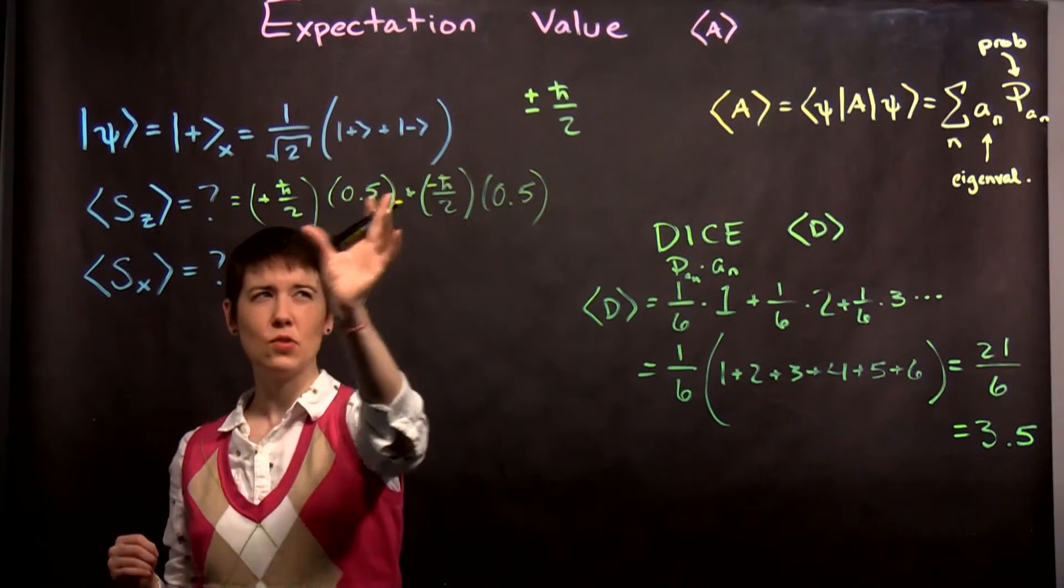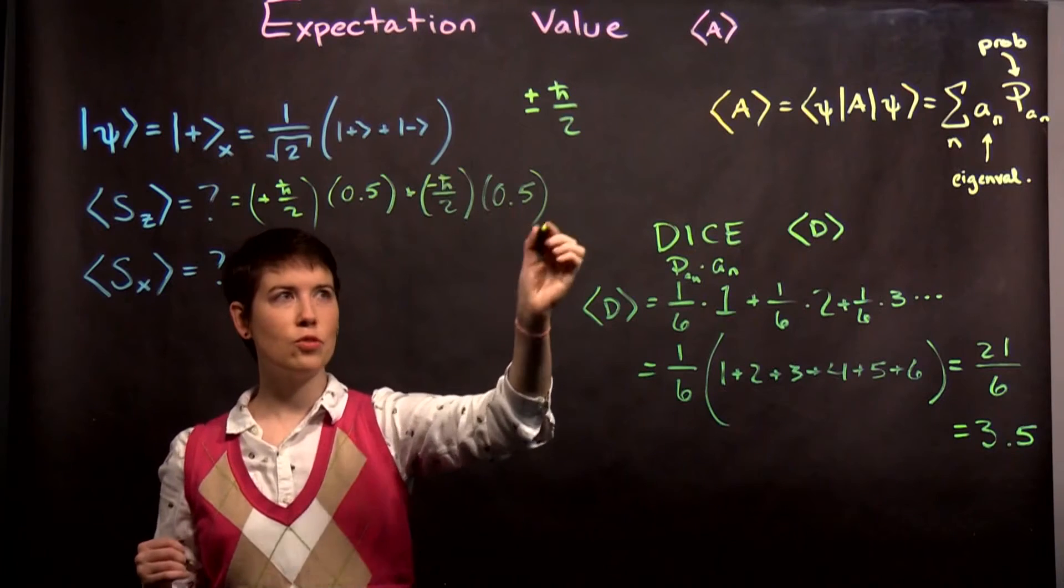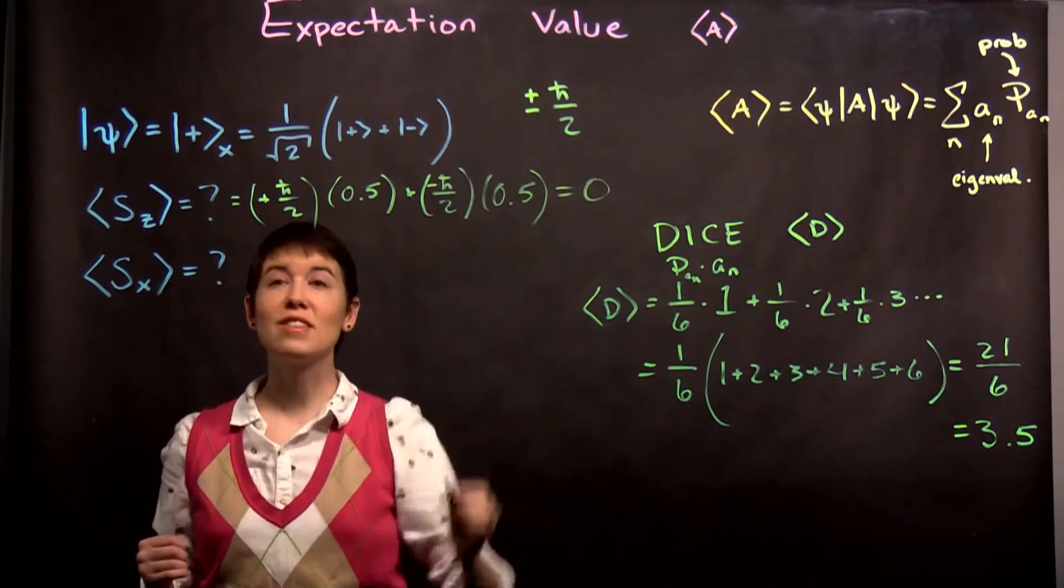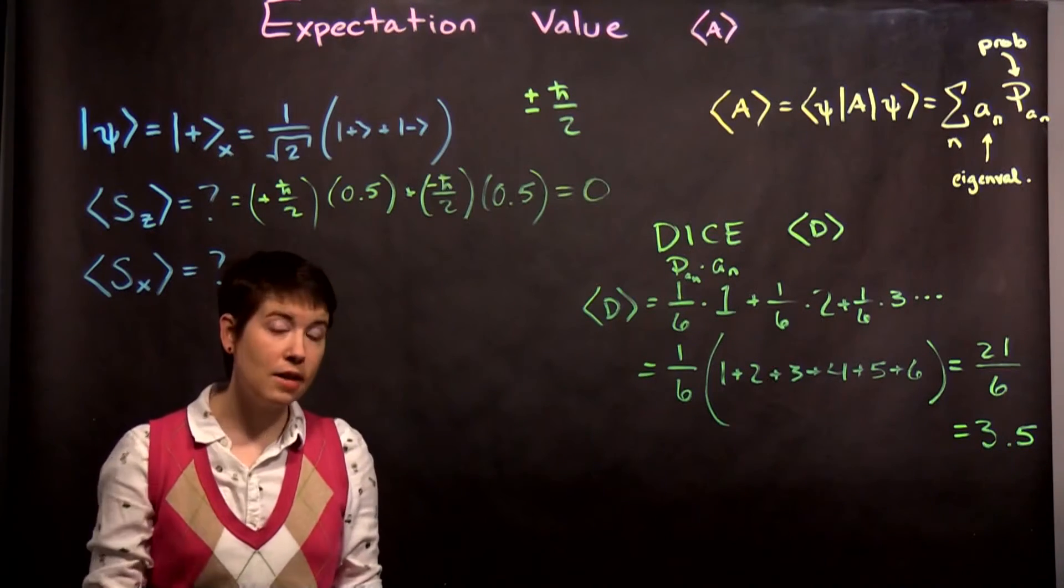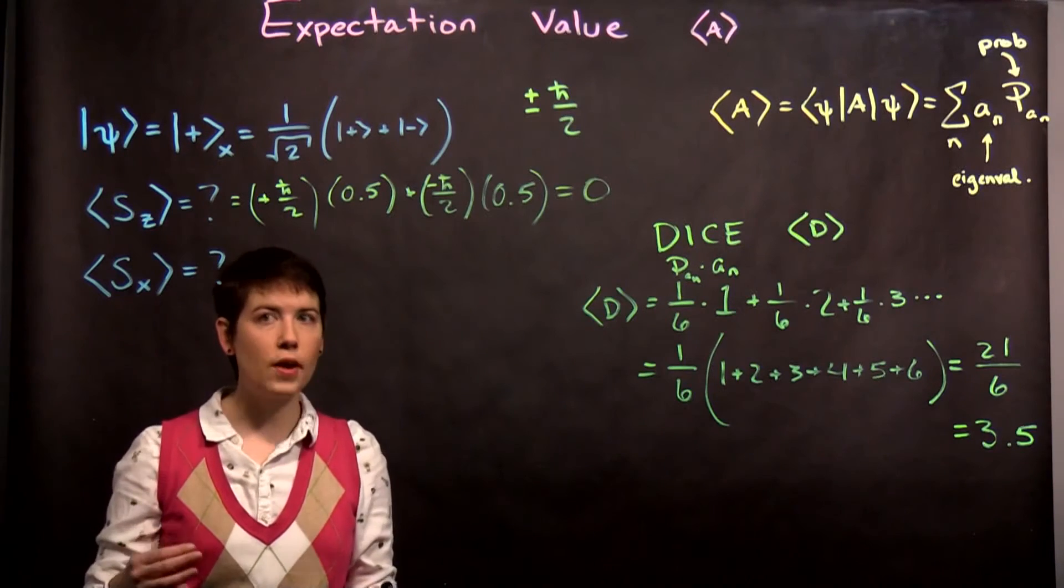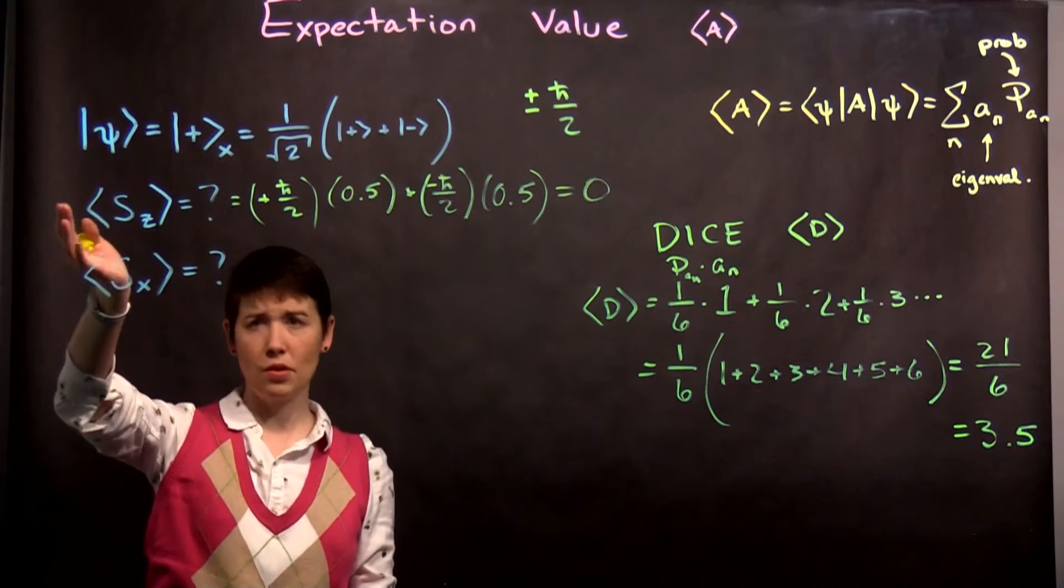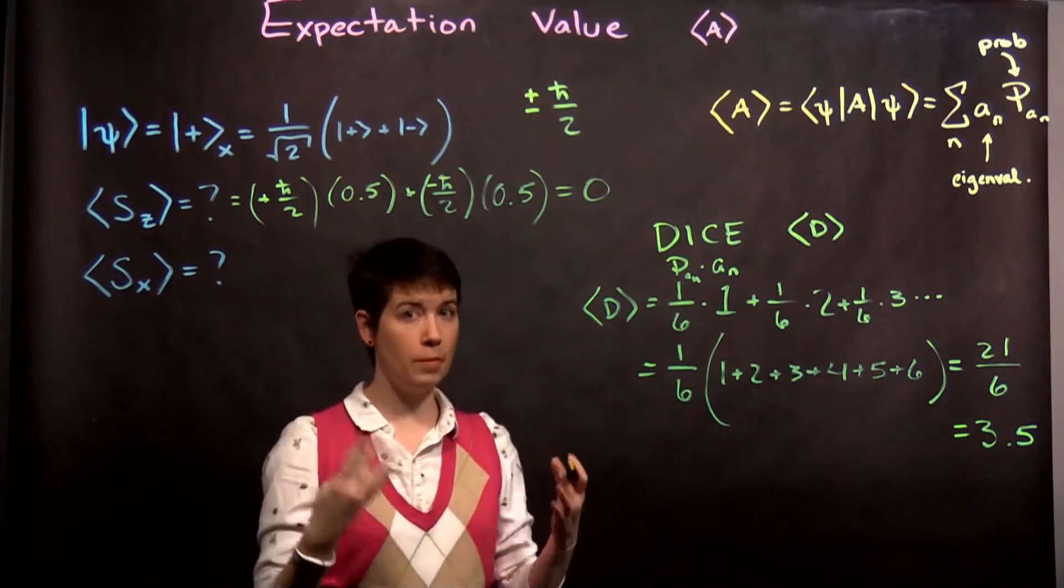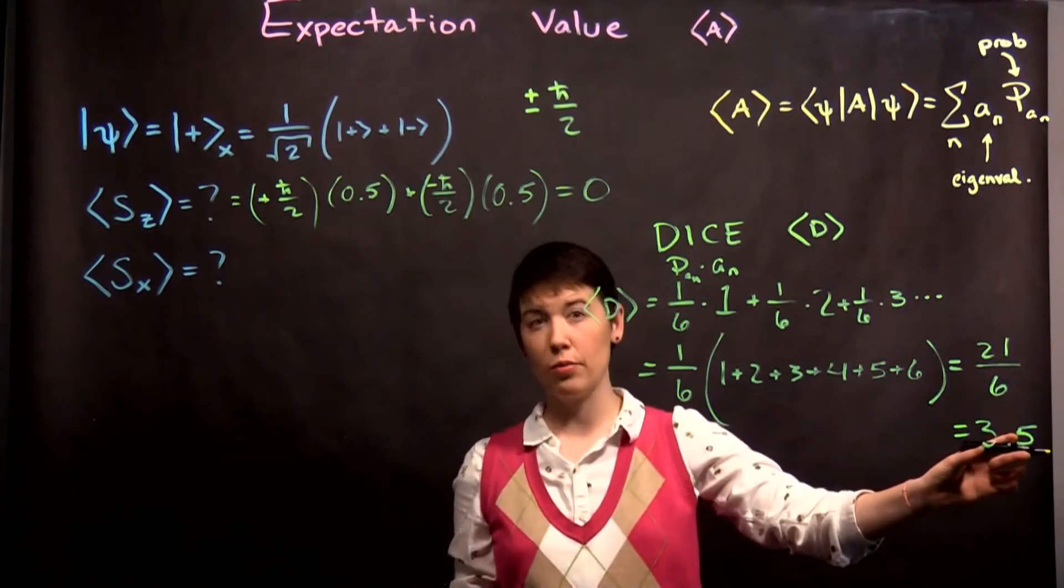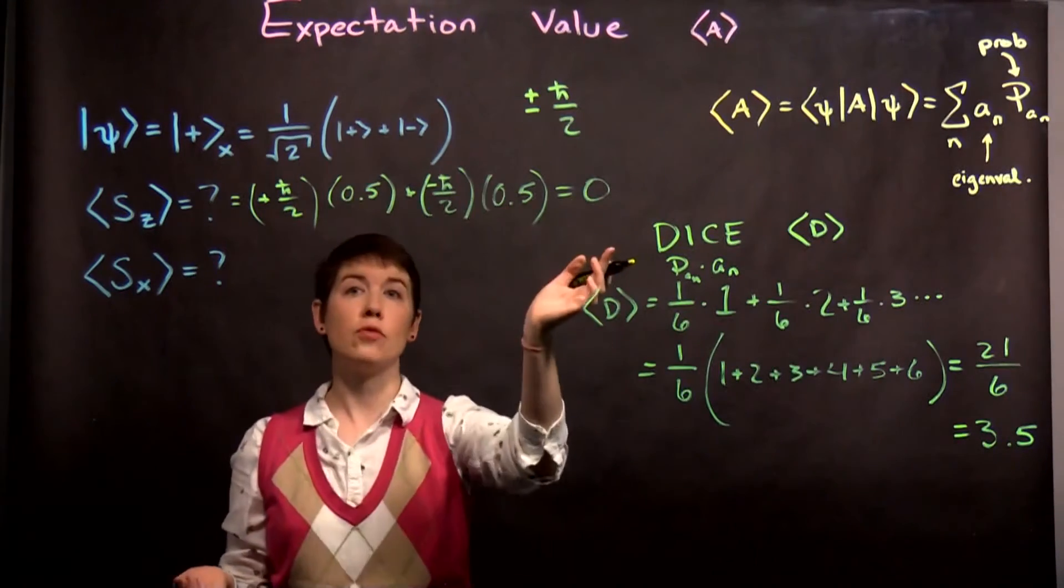What you might be able to see here is that this term and that term are the same in magnitude, equal and opposite in sign, so it's actually 0. The expectation value, the average value of measuring spin in the z direction is 0. That doesn't mean we ever measure 0, just like a die is never going to give you 3.5, but that's the average value.